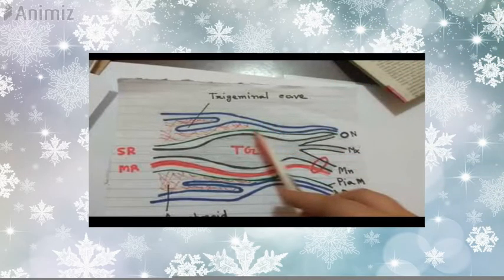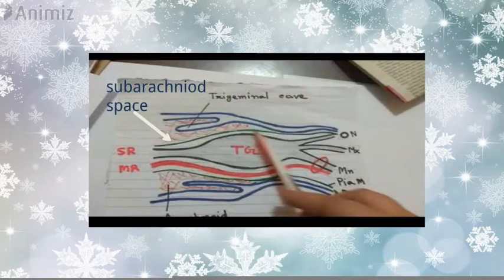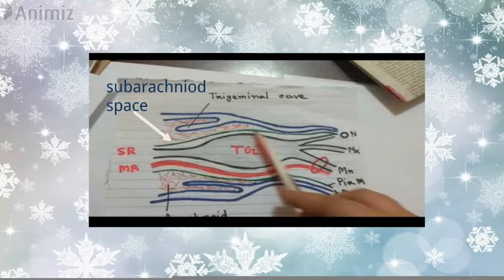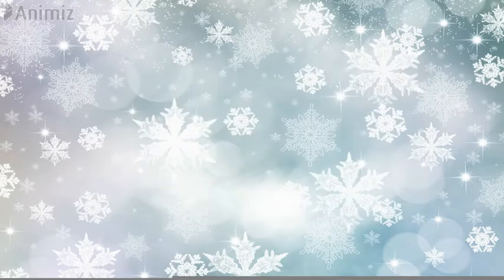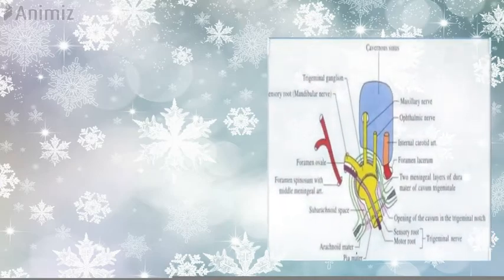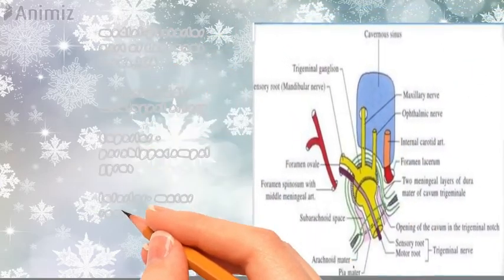The trigeminal cave is formed by two layers of meninges. The posterior half of the cave has subarachnoid space, but the anterior half does not. Since the subarachnoid space contains CSF, the posterior half of the trigeminal ganglion is bathed in CSF, but the anterior half is not — it expands into three branches because it does not contain subarachnoid space.